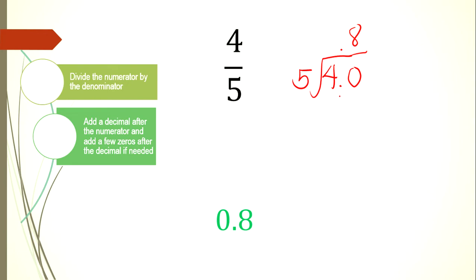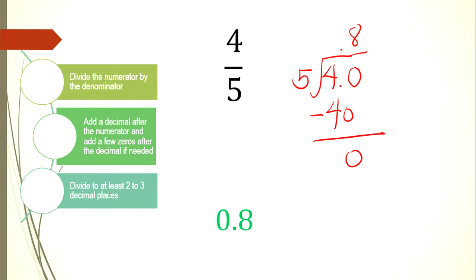40 divided by 5 is 8. Multiply: 8 times 5 is 40, with no remainder. So the answer is 0.8. To satisfy two decimal places, 0 divided by 5 is 0, giving us 0.80, or simply 0.8.